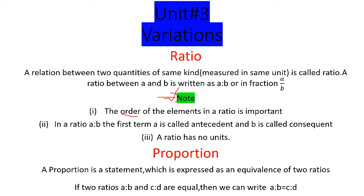دوسرا note یہ ہے کہ کسی بھی ratio a:b میں پہلی term 'a' کو antecedent کہتے ہیں اور 'b' کو consequent کہتے ہیں۔ یہ objective اور short question کے لیے اہم ہے۔ تیسری بات یہ ہے کہ ratio کا کبھی کوئی unit نہیں ہوتا — کیونکہ same unit میں measure ہونے کی وجہ سے fraction میں وہ units cancel out ہو جاتے ہیں۔